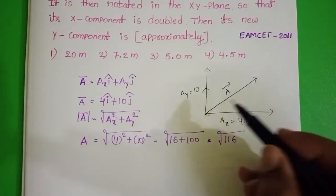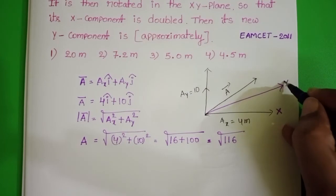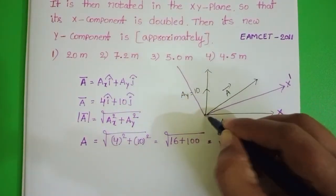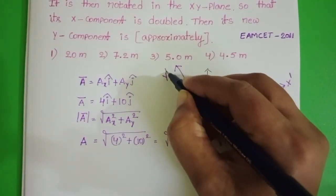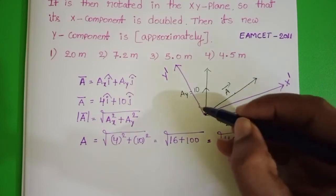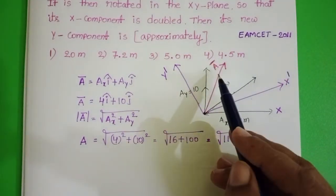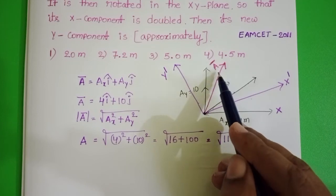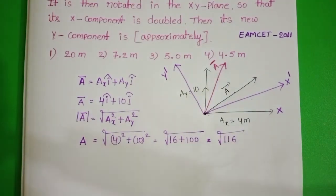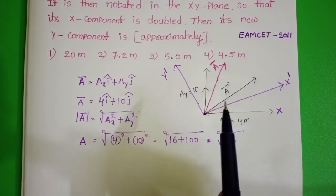The xy plane is rotated. This is the initial position of the x axis; finally the position of the x axis changes — let it be x dash. This is the direction of the y axis. When the xy plane is rotated, the position of the given vector also changes. Here, only the direction of the vector changes, but there is no change in the magnitude of the given vector. So remember: when the xy plane is rotated, the direction of the vector changes but the magnitude remains constant.